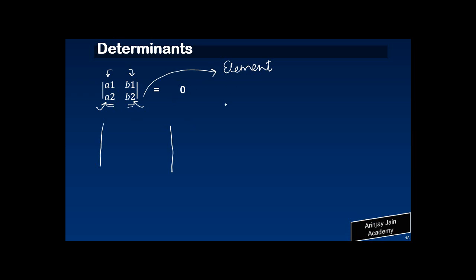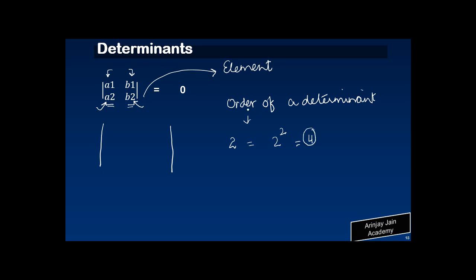Now, what do we mean by the order of a determinant? If we say that the order of a determinant is two, that means it has two squared, which is equal to four elements. So a determinant of order two is something which has four elements in it.